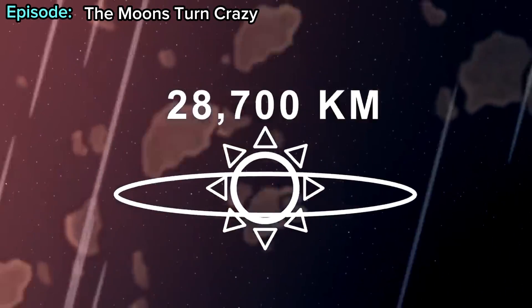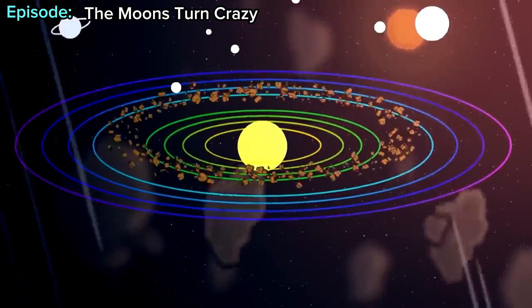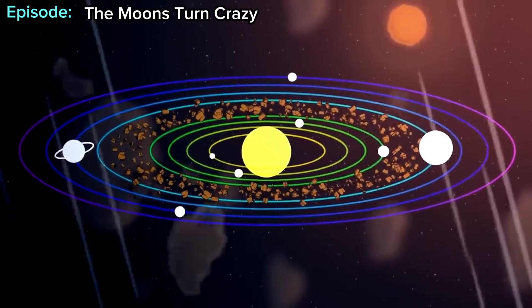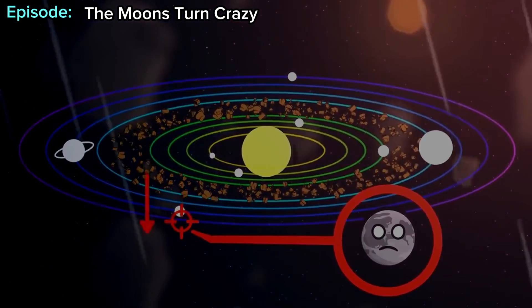The solar system is 287 billion kilometers wide! The solar system's very wide, but it's still a big disk. All the Earth's moon needs to do is continue to go down and he'll eventually leave the solar system.